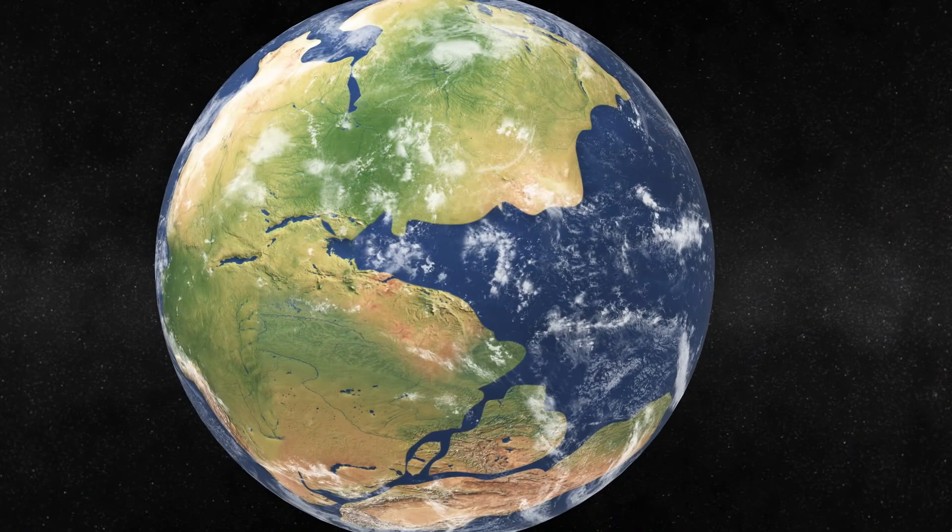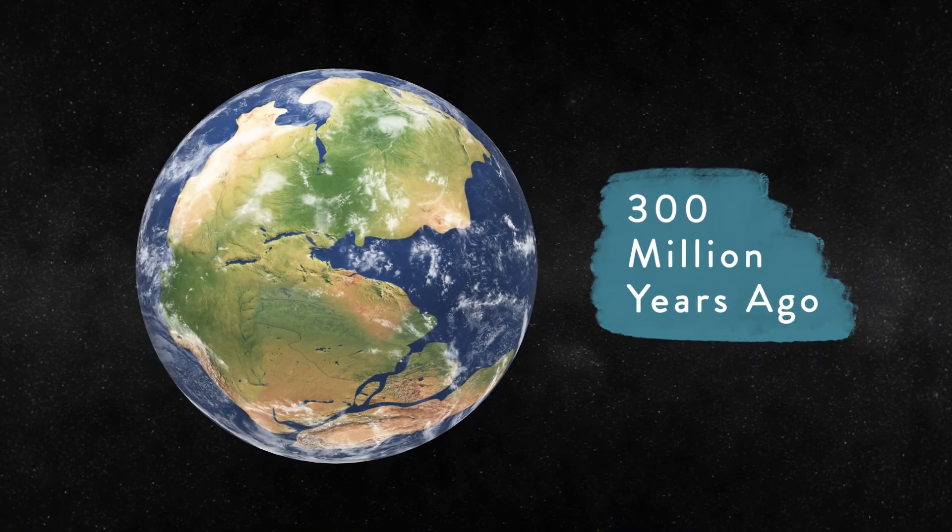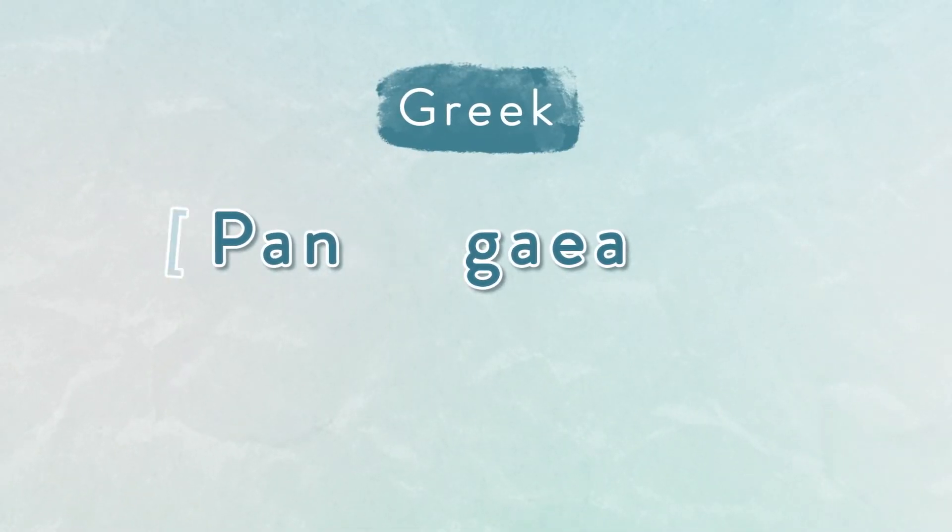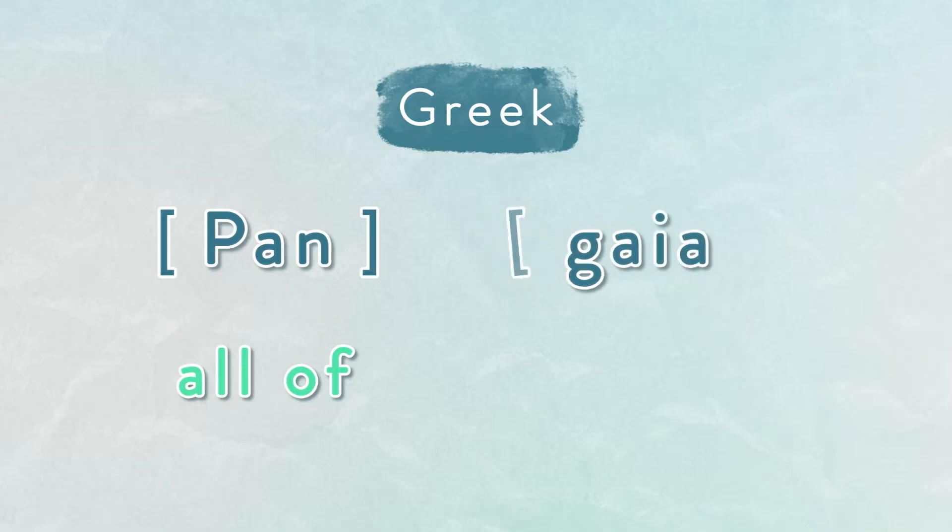300 million years ago, scientists believe the Earth looked something like this. The name comes from ancient Greek pan, all, and Gaia, the Earth.